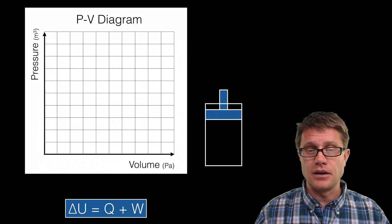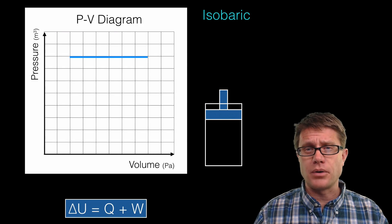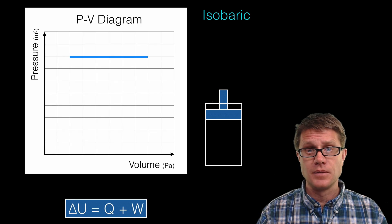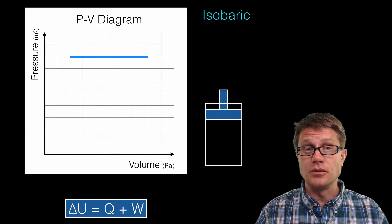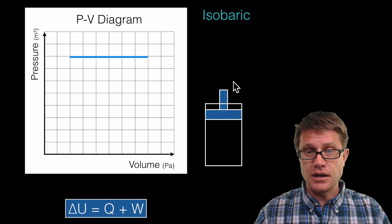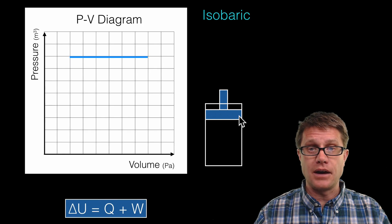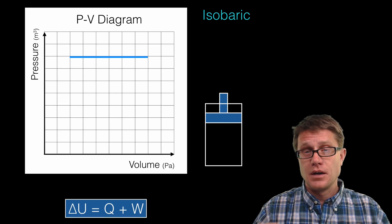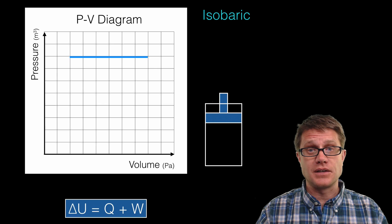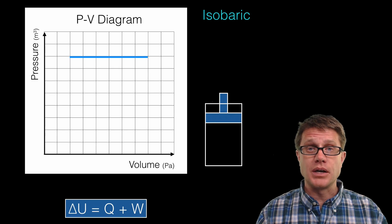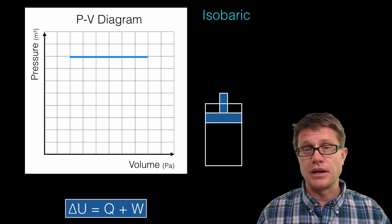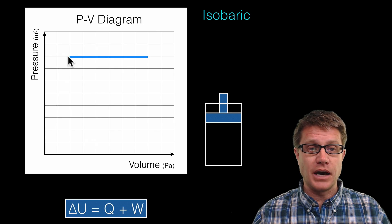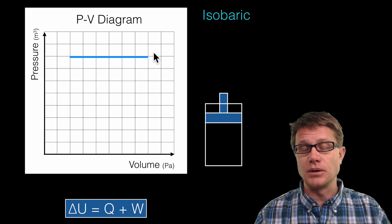This is a PV diagram. Let us start with an isobaric process. In an isobaric process, we keep the pressure the same but change the volume over time. We allow the piston to move in and out. The pressure on the inside stays the same — that piston moves back and forth — but we can add or remove energy. Since it is free to move, the pressure stays the same. If you see a horizontal line on a PV diagram, you know it is isobaric.